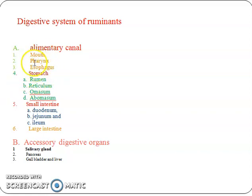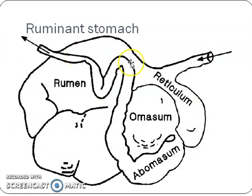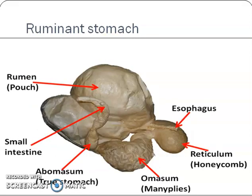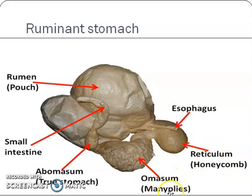The digestive system of ruminants includes the alimentary canal and accessory digestive organs. This is the figure of the ruminant stomach. It has four compartments: the rumen, which is the largest compartment; reticulum; omasum; and abomasum. The reticulum is also called the honeycomb because its structure is just like a honeycomb. The omasum has many folds, and the fourth stomach is the abomasum.